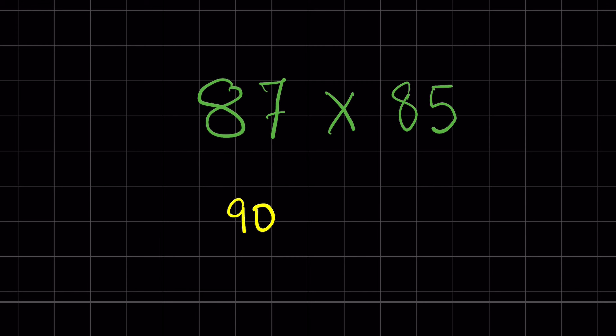Now 87 and 85 are closer to 90, so let's take 90 as your base number. Now 87 is 3 less than 90, and 85 is 5 less than 90.